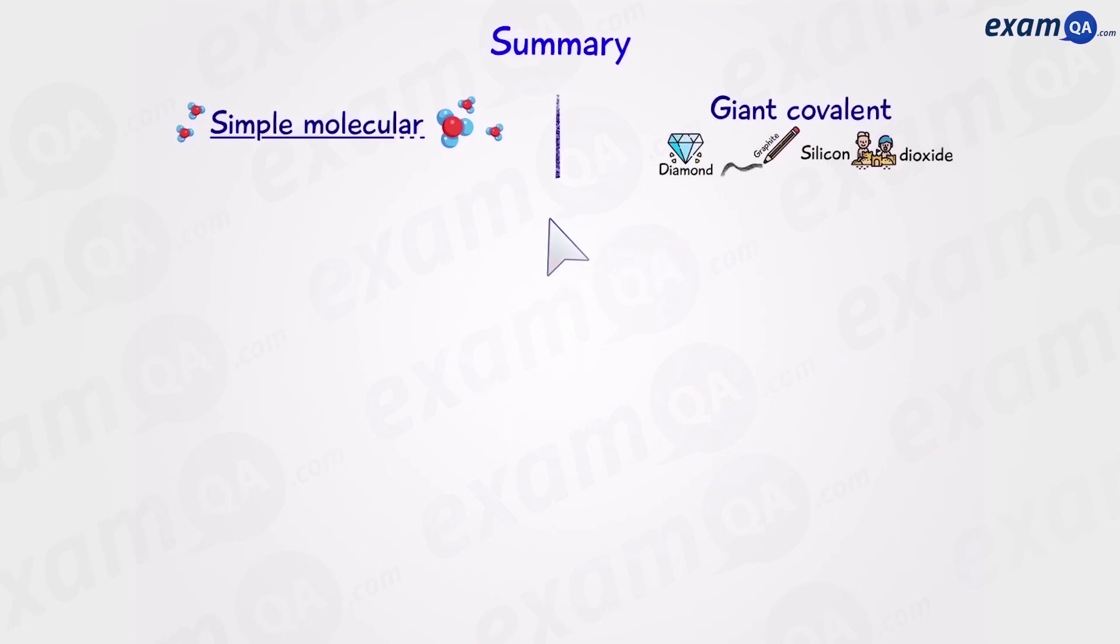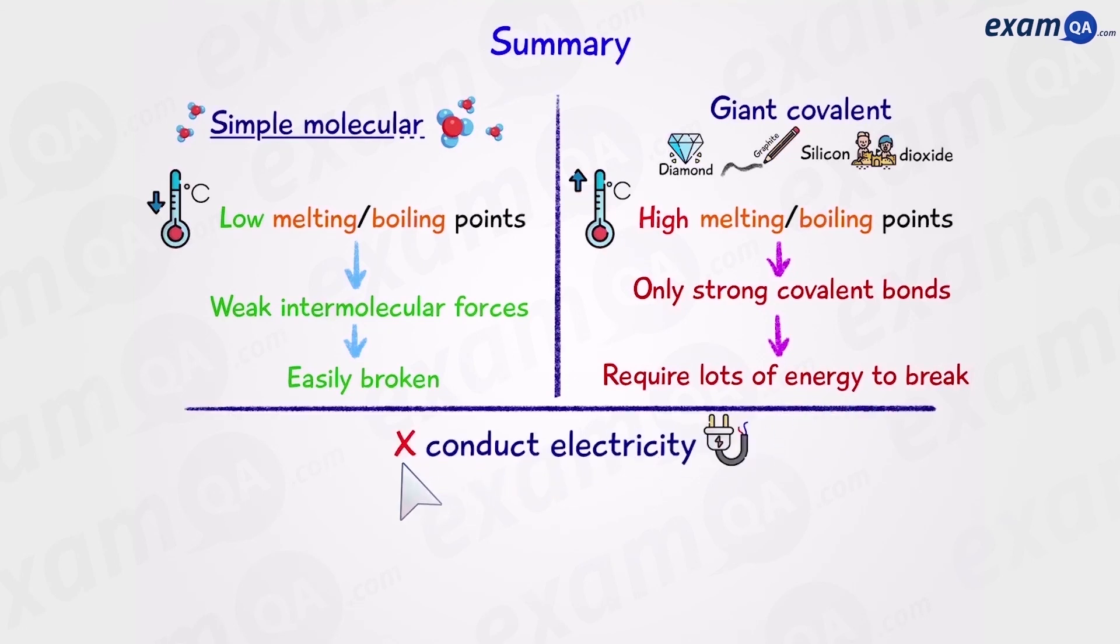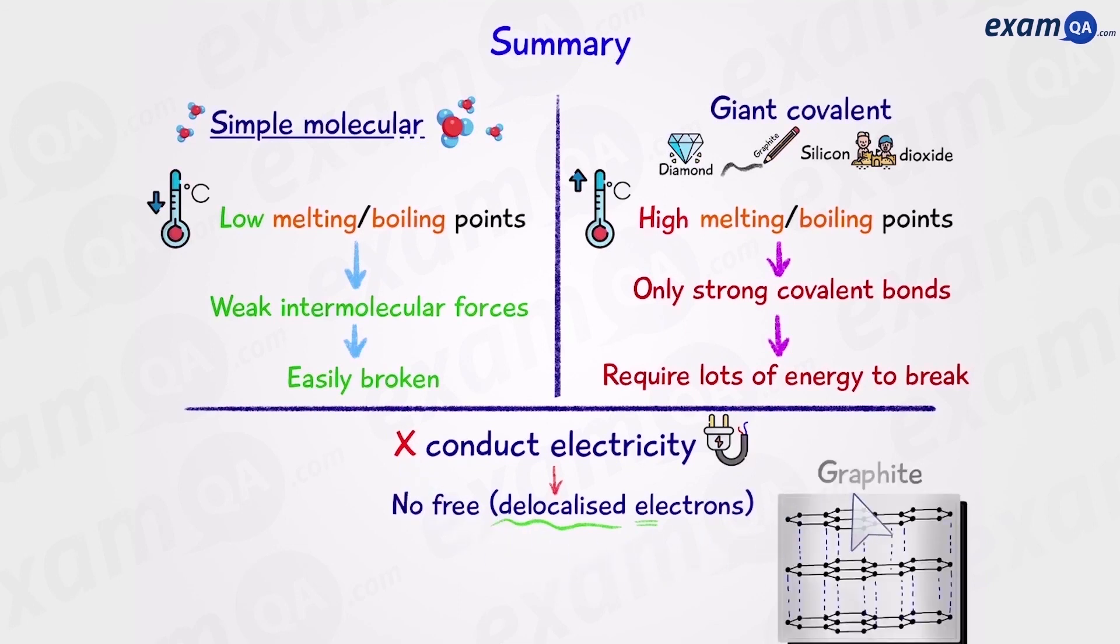Okay, let's summarize the differences between simple molecular and giant covalent structures. The first difference is melting point. Simple molecular substances have low melting and boiling points. This is because they have weak intermolecular forces, which are easily broken. As for giant covalent substances, they have high melting and boiling points. Because they only have strong covalent bonds, which require a lot of energy to break. One thing in common is that they do not conduct electricity. This is because there are no free electrons. Except for graphite. Graphite has delocalized electrons between the layers. And as a result, graphite can conduct electricity.